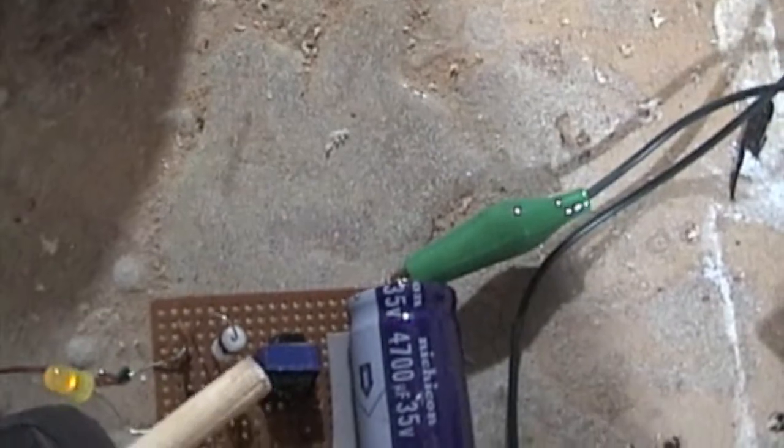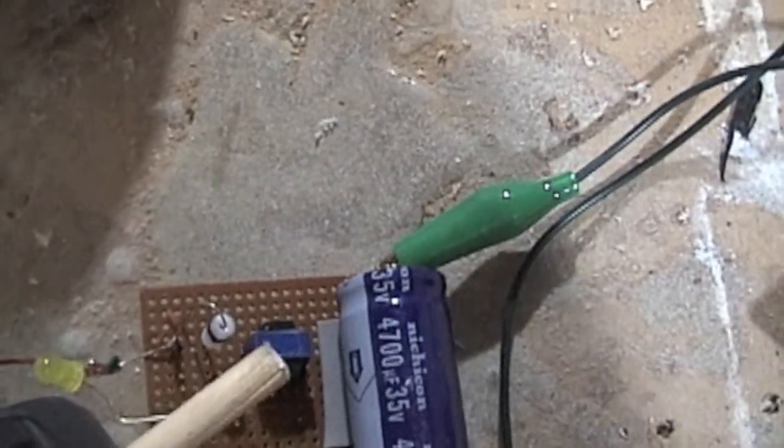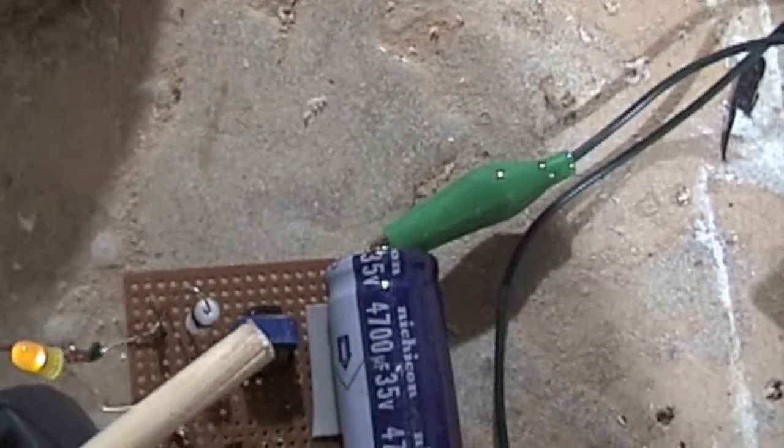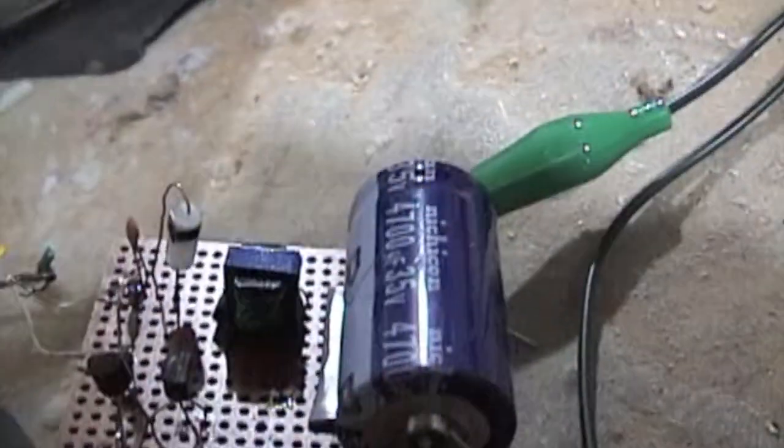That right there is the transformer out of a CFL circuit. And I've got 7 turns. I don't know if you can see that. 7 turns of primary on it.